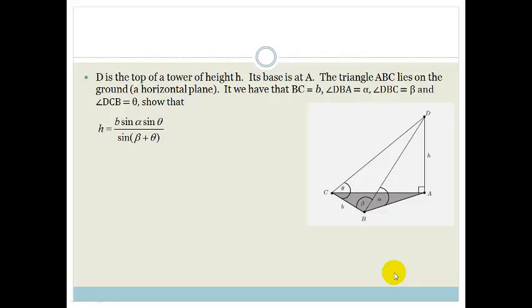So it says, D is the top of the tower H. So let me find my pen. D is the top of tower H. At its base is A. The triangle ABC lies on the ground and this is a horizontal plane. And Grade 12s, if they haven't colored in like this for you, I suggest you just put a little bit of pencil shading in just to help you get the impression of 3D because this is the ground here.